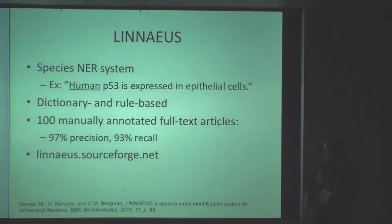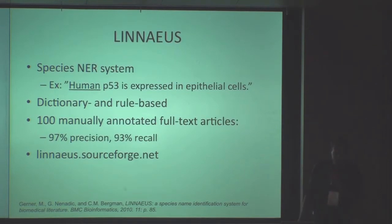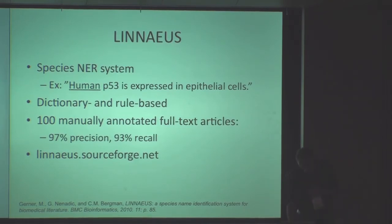The first project was Linnaeus, which is a species named entity recognition system, geared towards text miners to enable more complex analysis. Basically, it finds in text where mentions of species occur. It's very simple for us when we see a sentence like 'human P53 is expressed in epithelial cells' — it's easy enough to figure out that 'human' is human. But for software to do that, it's not completely trivial. It links entities to a database and is based on a combination of dictionaries and rules, and has good accuracy. It's available online.